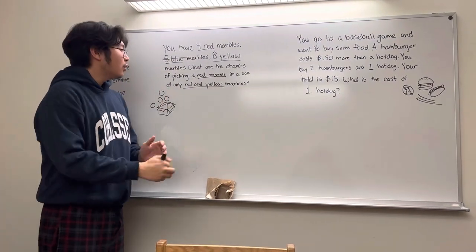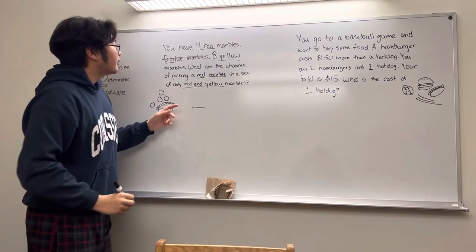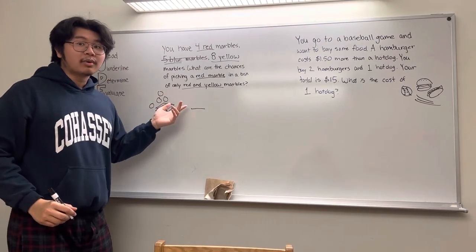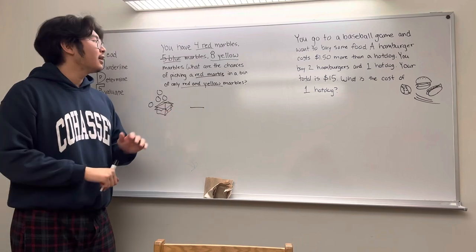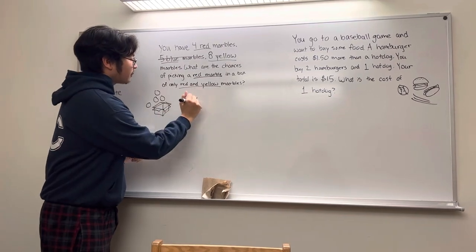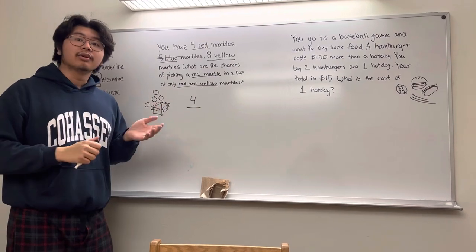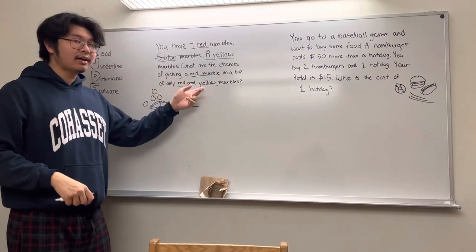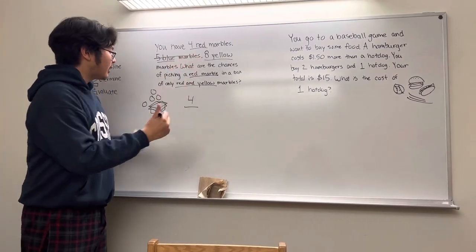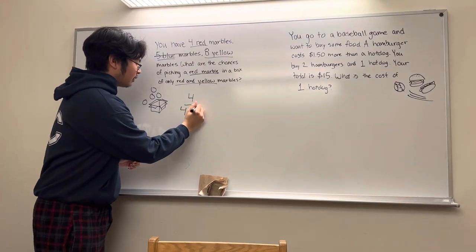So, in order to solve the question, we can create a fraction. In the numerator, we can put the amount of red marbles, because that's what we're trying to find, which is four. And in the denominator, we can put how many are in total in the box, which is the amount of red and yellow, which is four and eight.